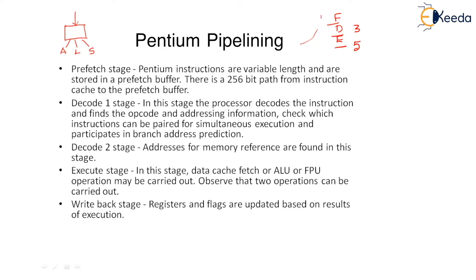When it comes to the Pentium pipeline, we have the following stages. The first stage is called the Prefetch stage. In the Prefetch stage, many instructions are fetched from memory and stored in a buffer. Pentium instructions are variable in length and are stored in the Prefetch buffer. There is a 256-bit path from the instruction cache to the Prefetch buffer, allowing us to store a total of 6 to 8 instructions at a time.